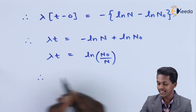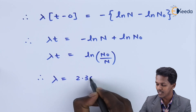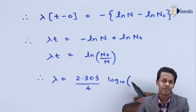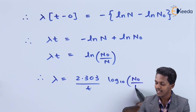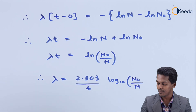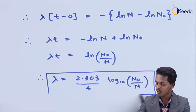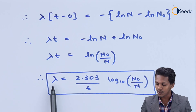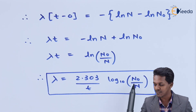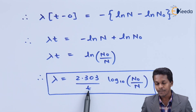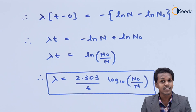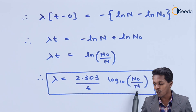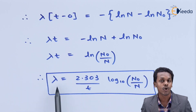Therefore we can write the equation as: lambda equals (2.303/t) times log base 10 of (N₀/n), where N₀ is the initial amount of the substance and n is the amount remaining after a certain period of time. Here, lambda is the decay constant, t is the time interval over which the change from N₀ to n has occurred — and t can be in seconds, hours, days, or years.